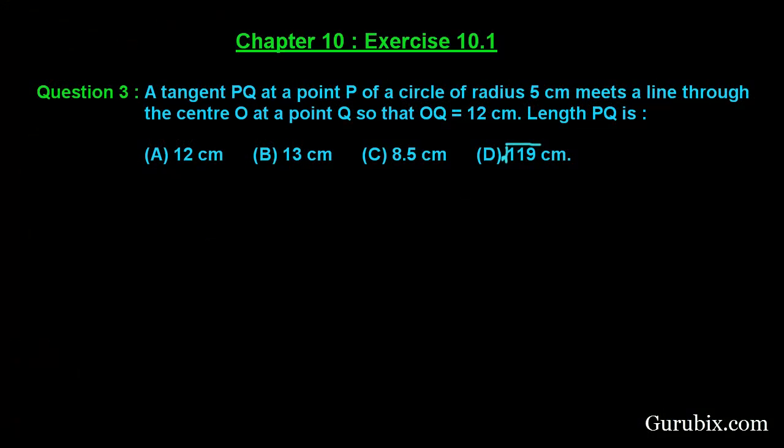Welcome friends. Let us solve question number 3 of Exercise 10.1 of Chapter 10. The question says: a tangent PQ at a point P of a circle of radius 5 centimeters meets a line through the center O at a point Q, so that OQ is 12 centimeters. Find the length of PQ. This is a very interesting question.